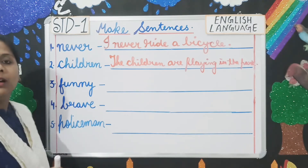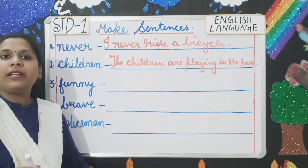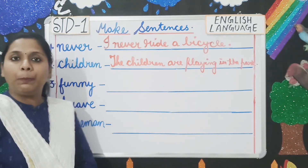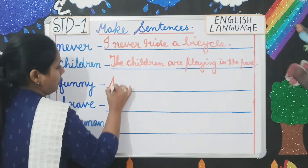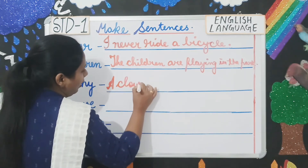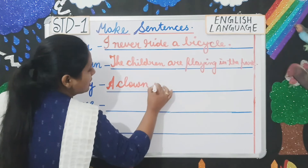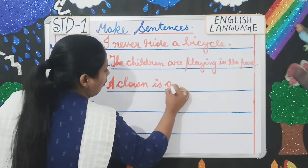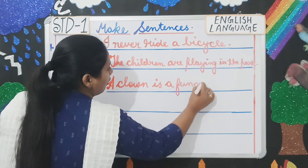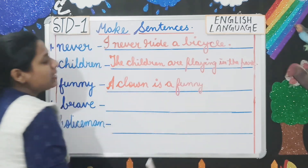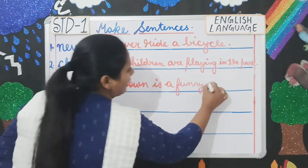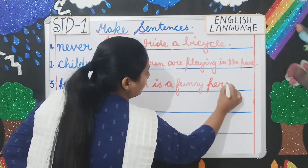Number three — 'Funny': you can write 'A clown is a funny person.' Funny means someone who makes us laugh.